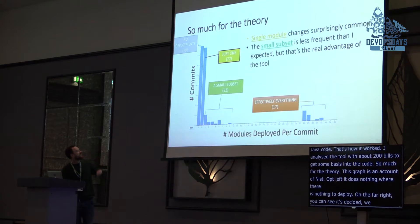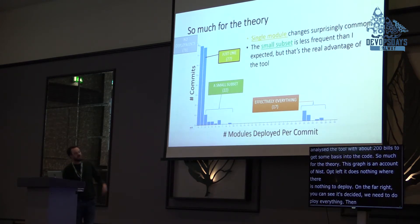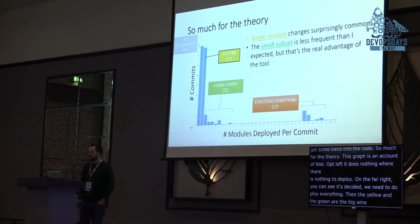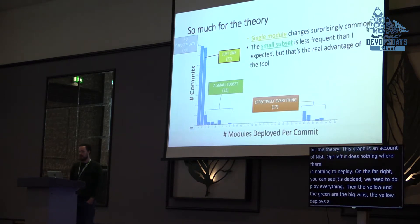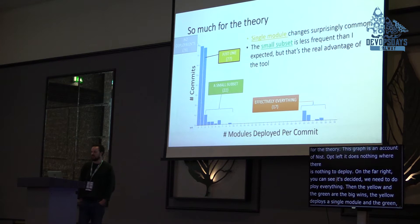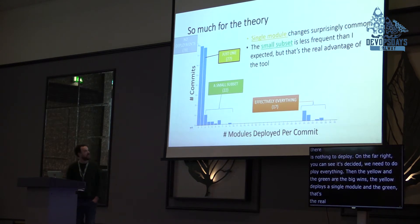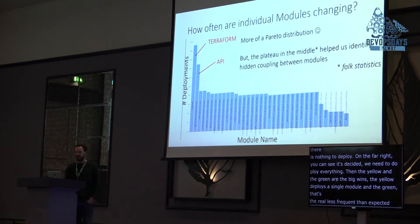The yellow and green are the big wins. The yellow is just deploying a single module out of the set of 35, and then the green — that's the real advantage of the tool. It's less frequent than I expected unfortunately, but it's when the tool deploys just a small subset of the modules.